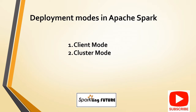There are majorly two deployment modes available to submit a Spark job. We can also run the Spark job in standalone mode — like in all my videos, you might have seen me run the Spark job in Eclipse itself. That is called standalone mode, and it is mainly used for testing and training purposes only. So we can say majorly two deployment modes are available in Apache Spark: the first one is client mode and the second one is cluster mode.